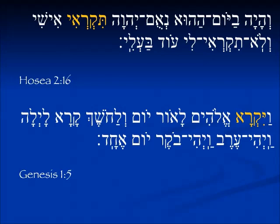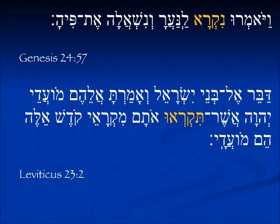From Genesis 1:5 we see from the very beginning — 'Vayikra Elohim' — and he called the light 'day.' For 'we will call,' Nikra, from Genesis 24:57 — in the story where the servant comes to get a bride for Isaac. After all the discussion and negotiation, the brother and father say, 'Nikra lana'ara' — we will call the girl — 'V'nish'alah mipiha' — we will ask her from her own mouth, we'll let her give her own response.